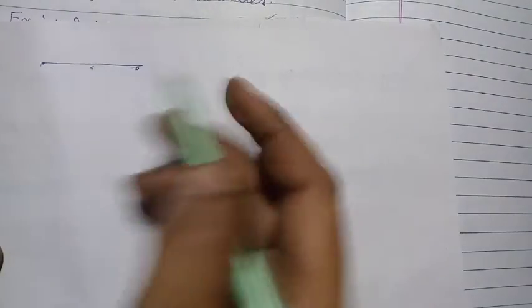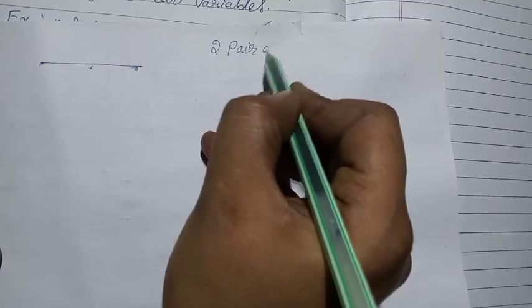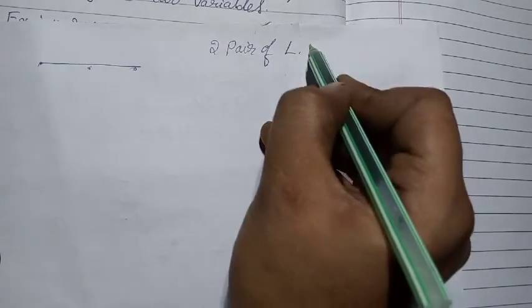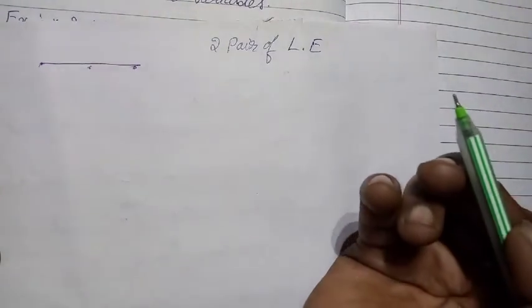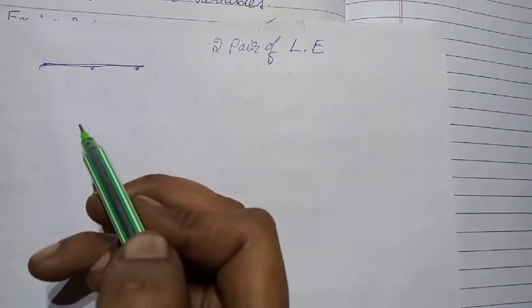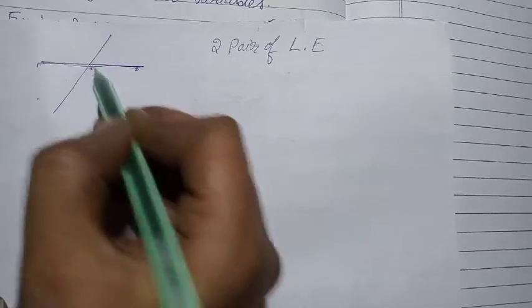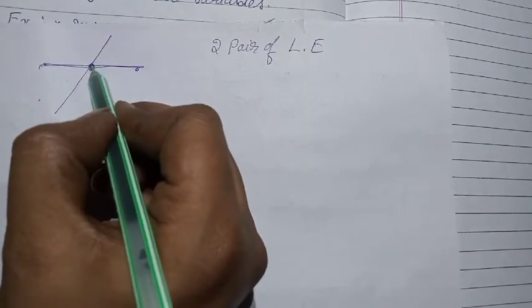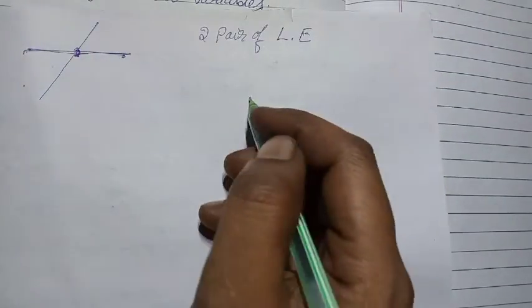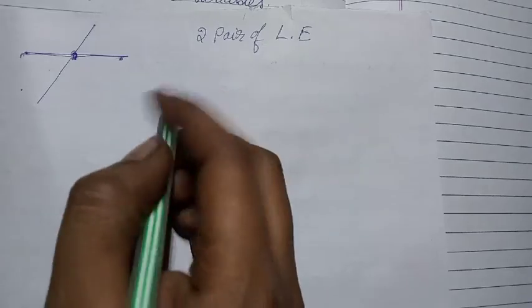If I take 2 pairs of linear equations — L.E. means linear equation — for 1 equation you get 1 line, and for another one you also get another line. Like this, if you get two lines, they can intersect. So in algebraic expression, if you take 2 pairs of linear equations, you will get 3 possibilities.